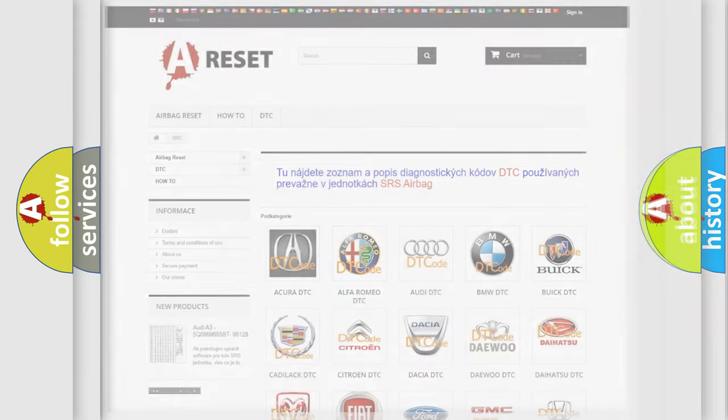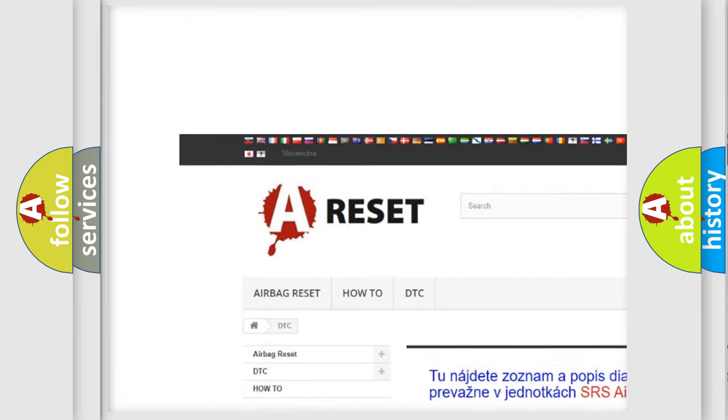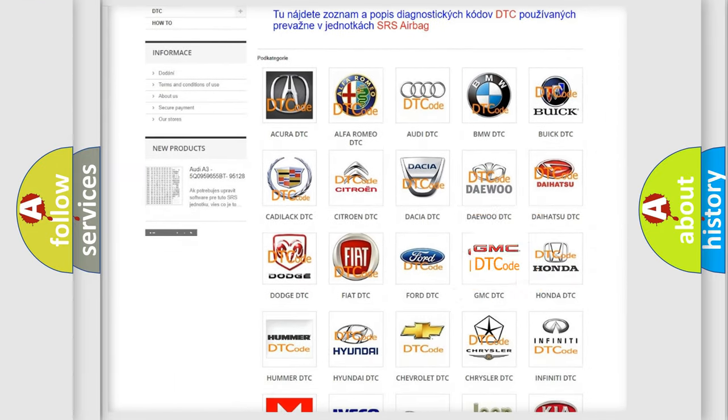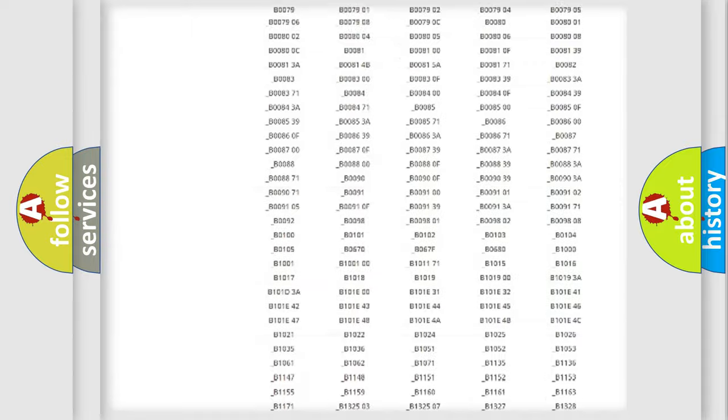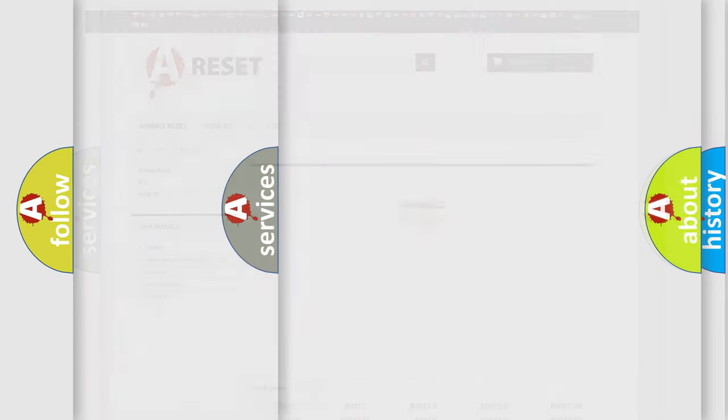Our website airbagreset.sk produces useful videos for you. You do not have to go through the OBD2 protocol anymore to know how to troubleshoot any car breakdown. You will find all the diagnostic codes that can be diagnosed in GMC vehicles, and also many other useful things.